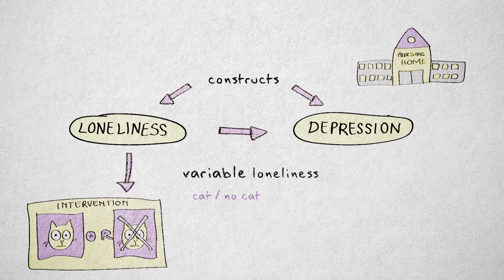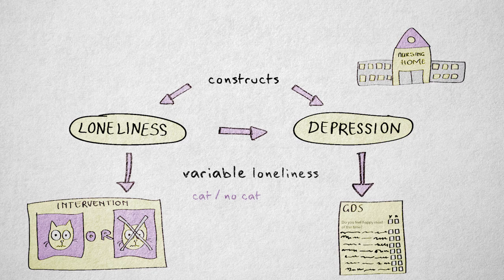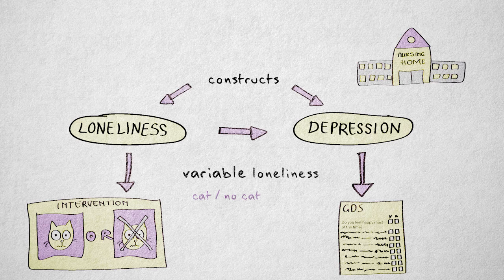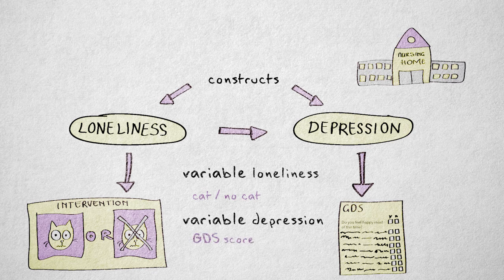Finally, I could operationalize depression by using the Geriatric Depression Scale, the GDS, consisting of 15 questions such as, 'Do you feel happy most of the time?' The variable depression now refers to depression as expressed through the scores on the GDS.